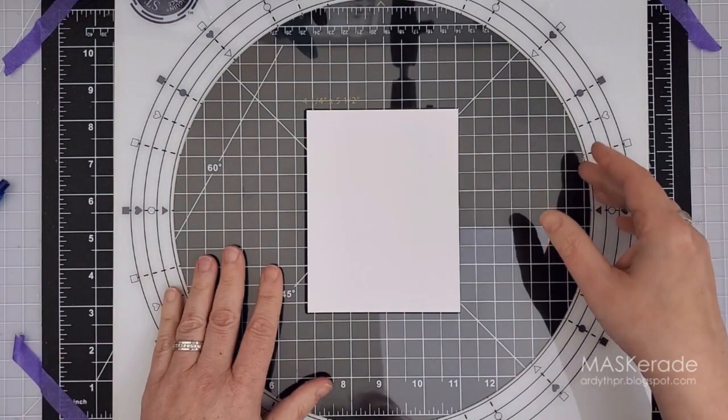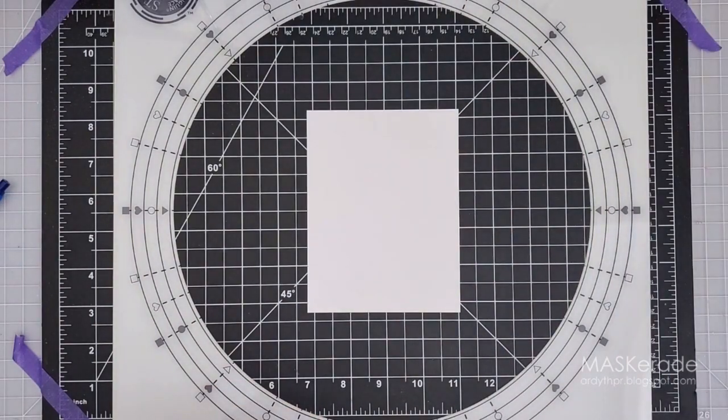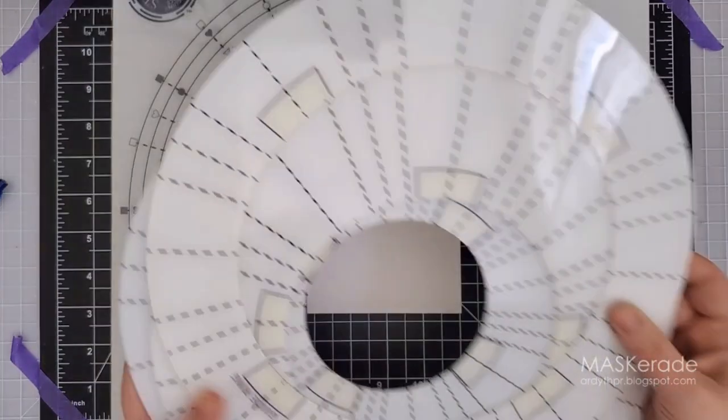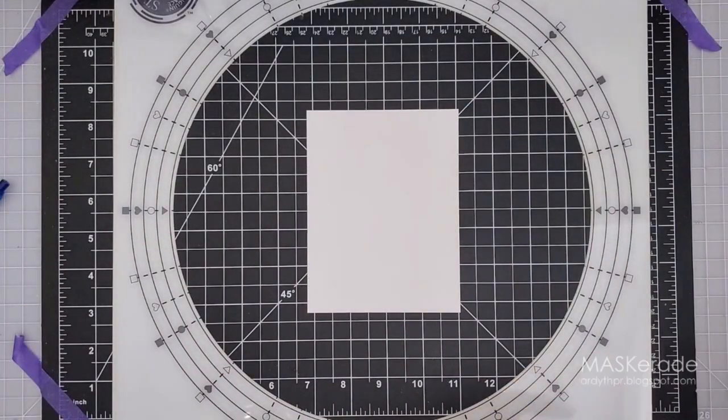Next are the stencil guides. Again there's a number of them and each one is designed for a different size of stencil. Eight inches, seven inches and this one which is four inches. I'm going to show you something really cool with this one later, so be sure to stick around to the end.